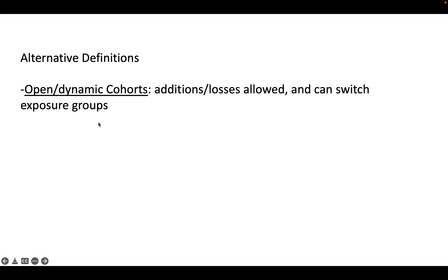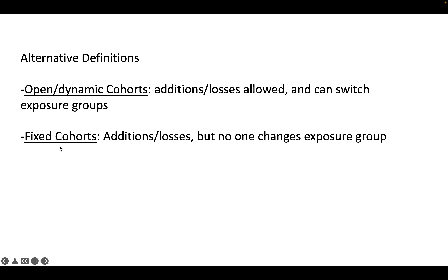To summarize the definitions: an open or dynamic cohort allows additions, losses, and switching between exposure groups. A fixed cohort allows additions and losses but not switching of exposure group. A closed cohort has no additions, no losses, and no switching of exposure group.